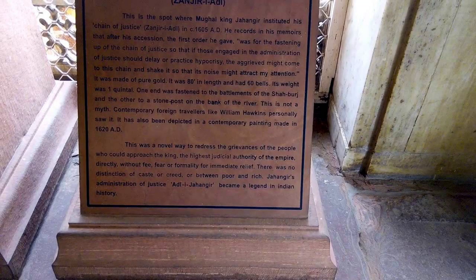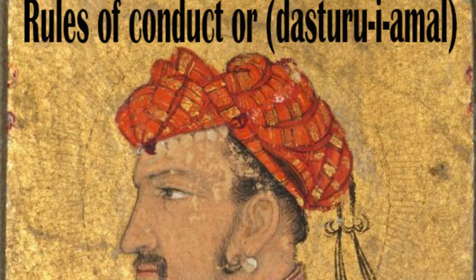It was made of pure gold, 27 meters in length and containing 60 bells. Its weight was around 150 kg. One end of it was made fast to the battlements of the Shahburj of the fort of Agra and the other to a stone post fixed on the bank of the river. At the same time, Jehangir gave 12 orders to be observed as rules of conduct or Dastur-e-Amal in all his dominions, and in this video we will be talking about those.